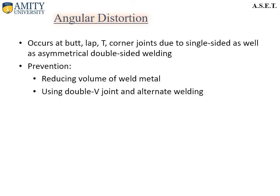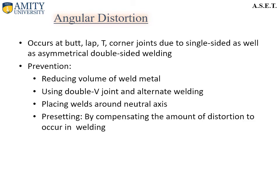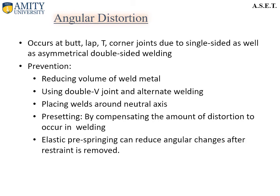Angular distortion occurs at butt, lap, T, and corner joints due to single-sided as well as asymmetrical double-sided welding. Prevention methods include: reducing volume of weld metal, using double-V joint and alternate welding, placing weld around the neutral axis, pre-setting by compensating for the amount of distortion expected, elastic free springing to reduce angular changes after strain is removed, and preheating and post-weld treatment.